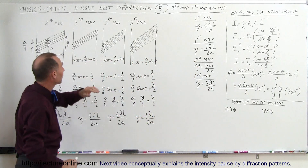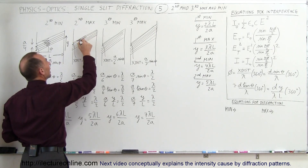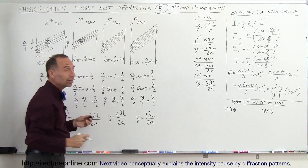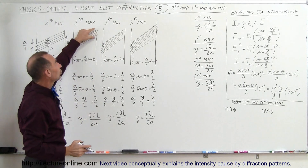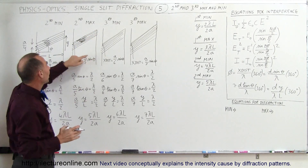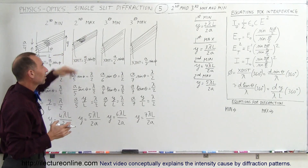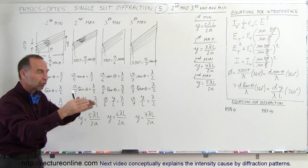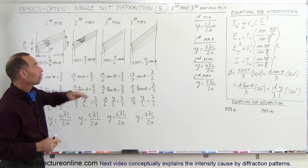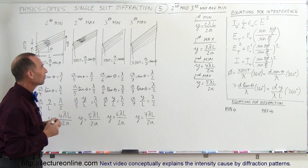Why does that give a maximum? The first-fifth of the beam cancels out the second-fifth, and the third-fifth cancels out the fourth-fifth, which leaves one-fifth of the beam with nothing to cancel out. This one-fifth gets through and makes a bright spot — not nearly as bright as the first maximum, and definitely not as bright as the central maximum. The central maximum has the whole beam getting through. The first maximum has one-third of the beam making it through, and the second maximum has one-fifth of the beam making it through.